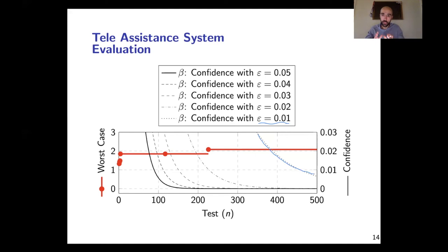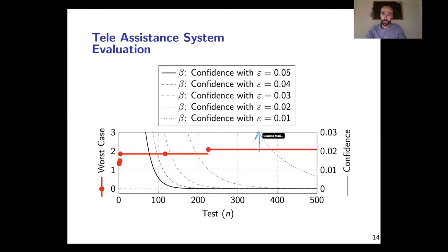With a very strict bound, we have a confidence that grows very slowly. If instead we accept a more loose bound, like 95% of the cases, we will obtain a confidence that grows pretty quickly. So epsilon is the probability of observing a performance worse than the ones observed in the test cases, and after the 500 tests we will have beta confidence that this probability is actually correct.